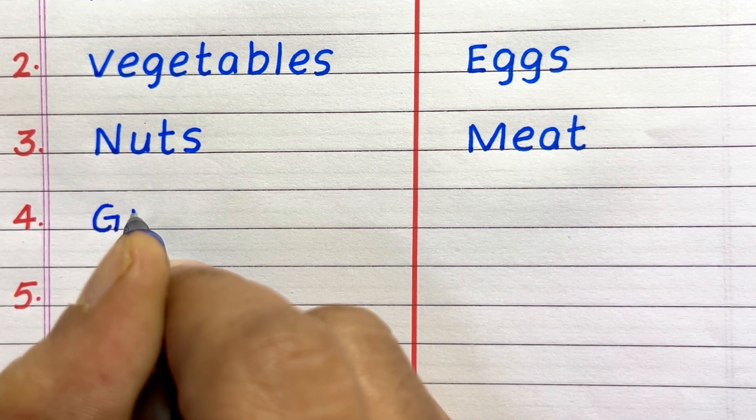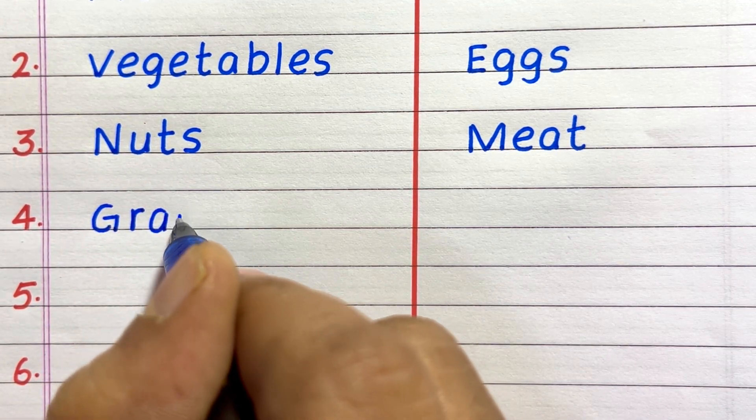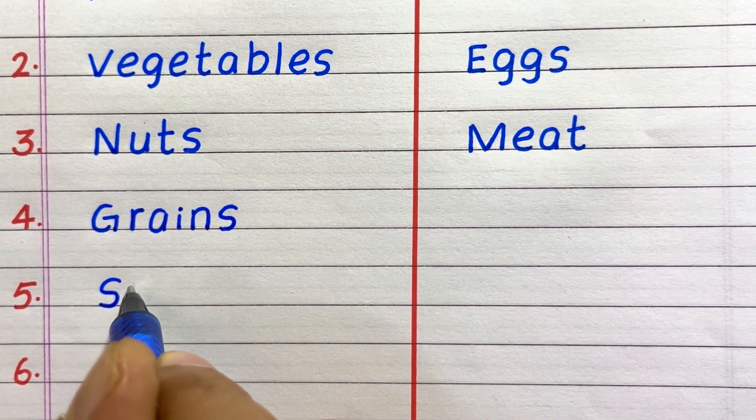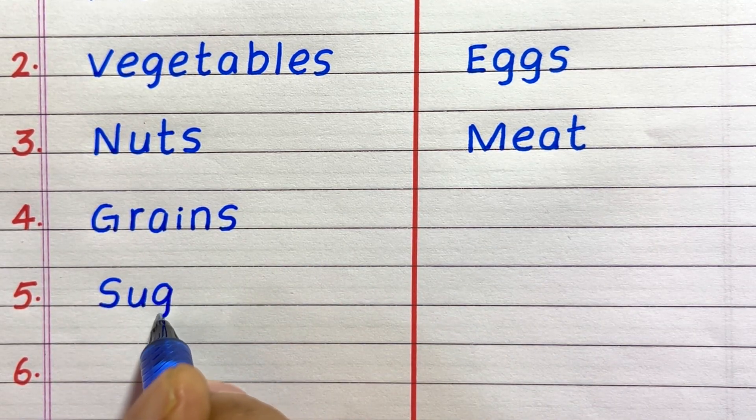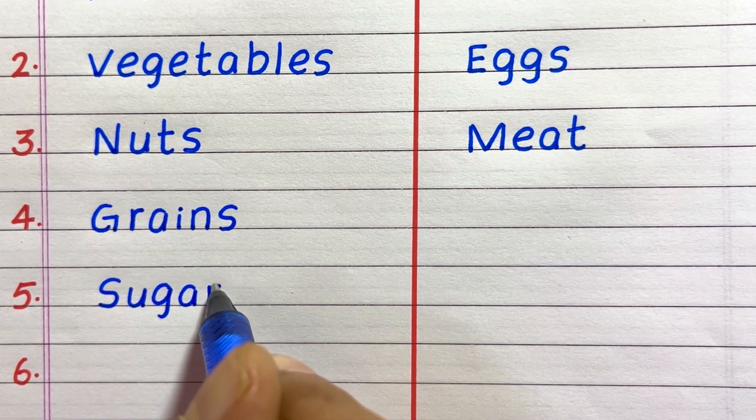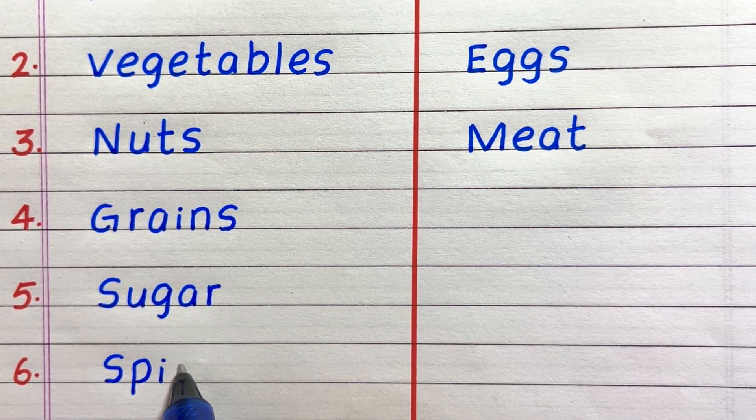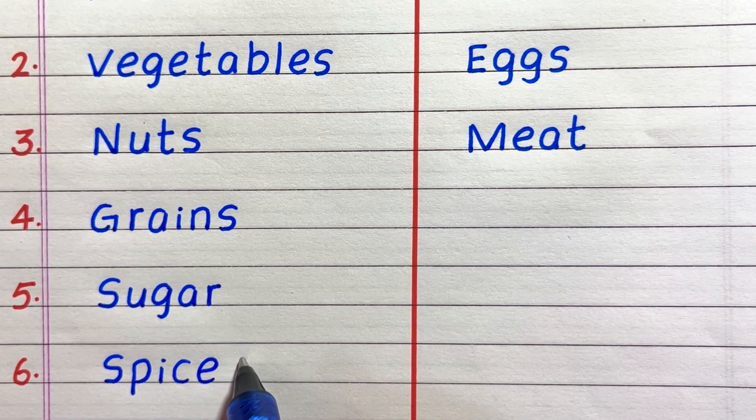Fourth thing that we get from plants is grains. Fifth, sugar. Sixth, spices.